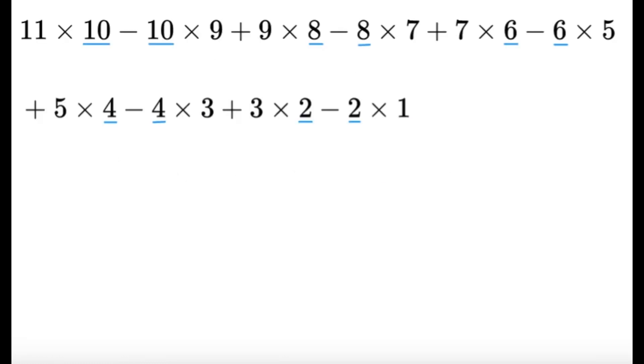So we have this. This is the entire thing that we're asked to get. And as you can see here, I've highlighted some of the numbers. So in the first two terms, the 11 times 10 and the 10 times 9, I highlighted the 10. In the next two, the 9 times 8 and the 8 times 7, I highlighted the 8. And similarly, I highlighted the 6, the 4, and the 2. The reason why I did that is because we can do some factoring.